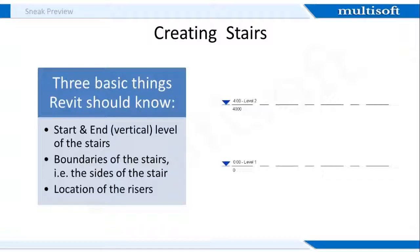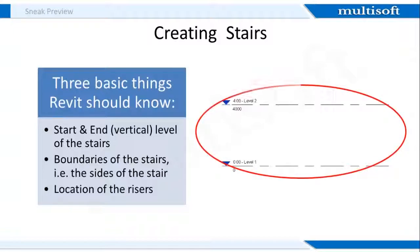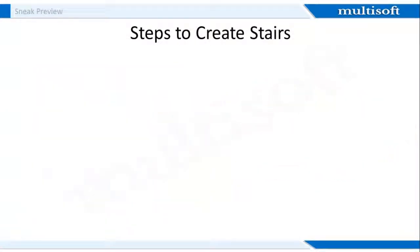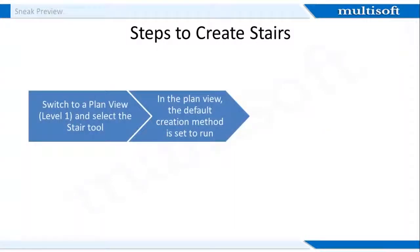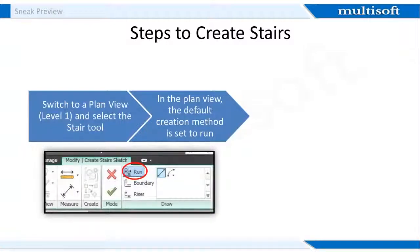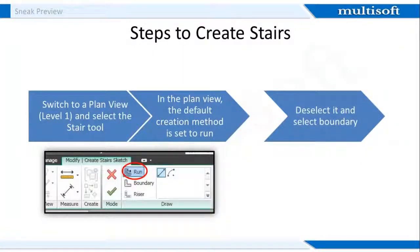Let's start with an example. I am going to start with a new Revit project file. I will use the two default levels in the project file as the bottom and top levels for my stairs. To create stairs, you firstly have to switch to a plan view and select the stair tool. As you can see in the figure, the default creation method is set to run. You need to deselect it and select boundary.